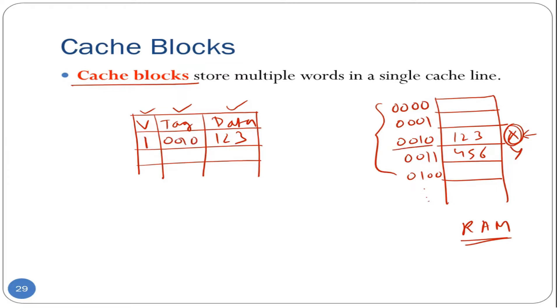However, now we know from principle of spatial locality that if this X was accessed, this neighboring location Y is also very likely to be accessed in the near future. So to take advantage of the spatial locality, what we will do is whenever there was a miss for this X, we will not only bring in X here in the cache, we will also bring in Y in the cache.